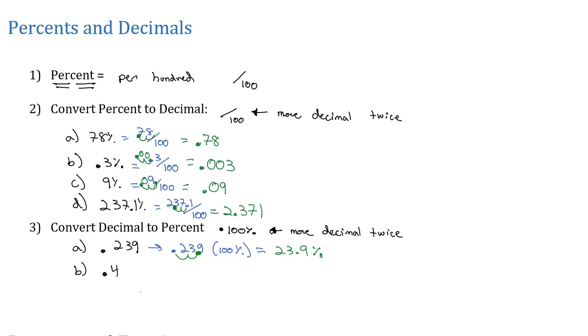What if I have 0.4? A common error I see is people say that's 4%, but that's not the case, because if I take 0.4 and multiply by 100%, that's going to move the decimal point twice, which means we need a zero placeholder to call that 40%.